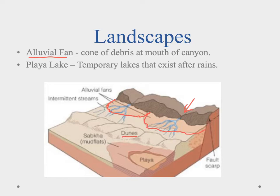We'll see dunes and talk about those more in the next lesson. But we also see playa lakes — these are lakes that will form when we have the rains, and then after the rains stop the lakes last for a little while until the water evaporates away. So these are our primary landscapes we're going to see in the desert.